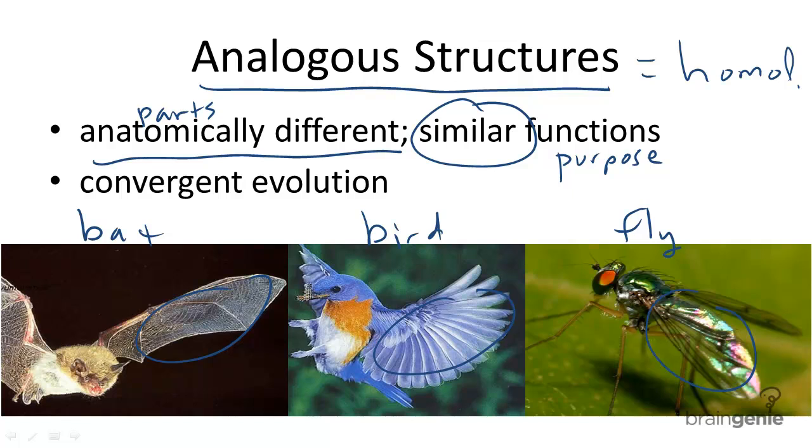So why are these structures important? Analogous structures are noticed as part of what's commonly deemed among scientists, convergent evolution. When two roads converge, they come together. Same thing here.